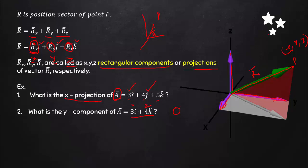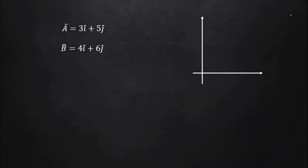This is a very important part. So you can understand how it works. If A-bar has only i and j components, it means the vector is in the xy-plane only.